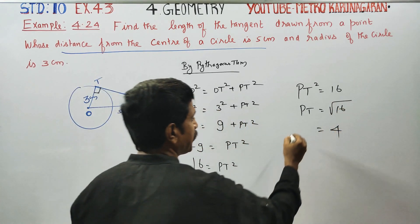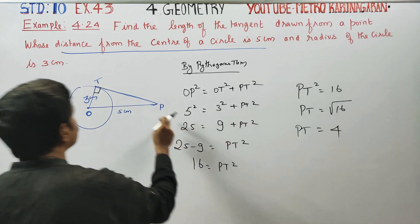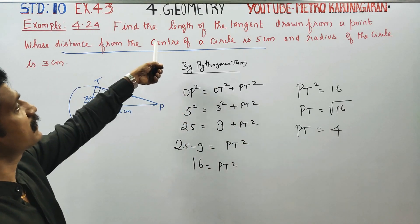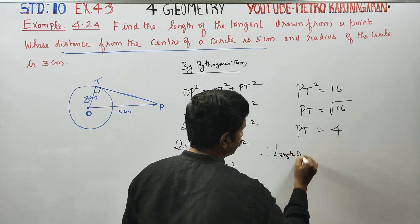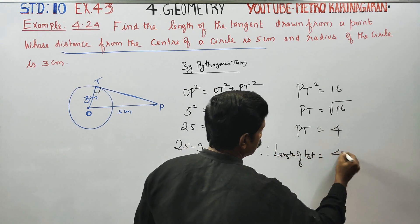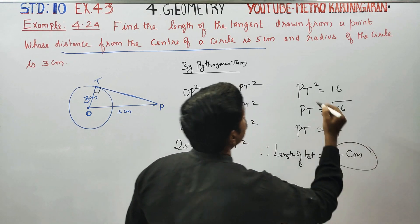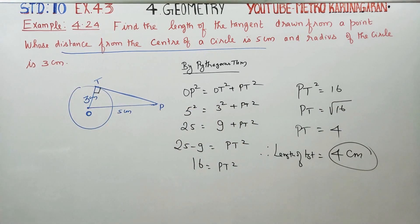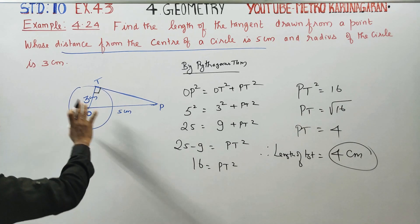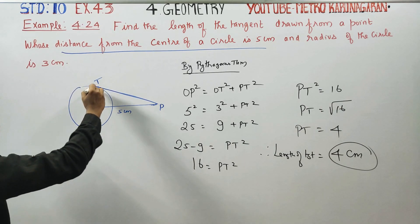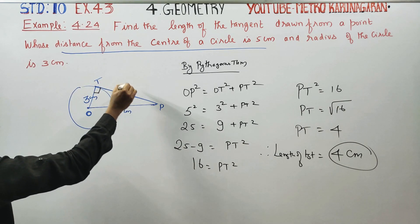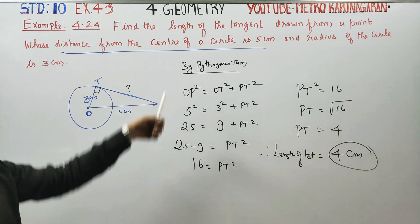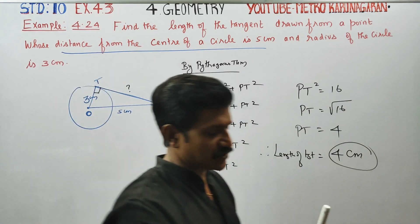Therefore, the length of the tangent PT is equal to 4 cm. That is our final answer. This is a 2-mark question: diagram equals 1 mark, answer equals 1 mark. Distance from center is 5 cm, radius is 3 cm, and PT is the tangent length.